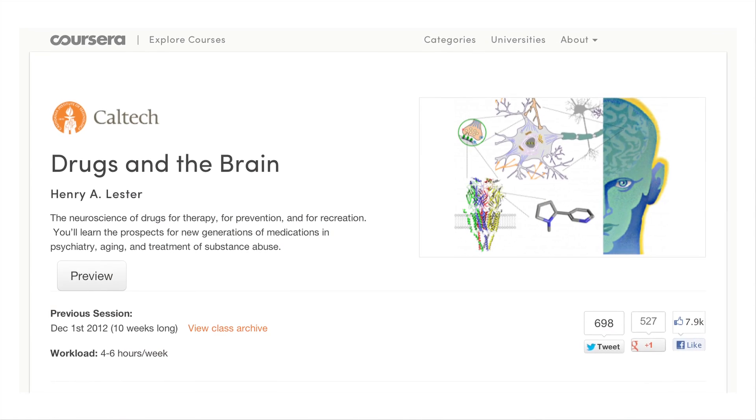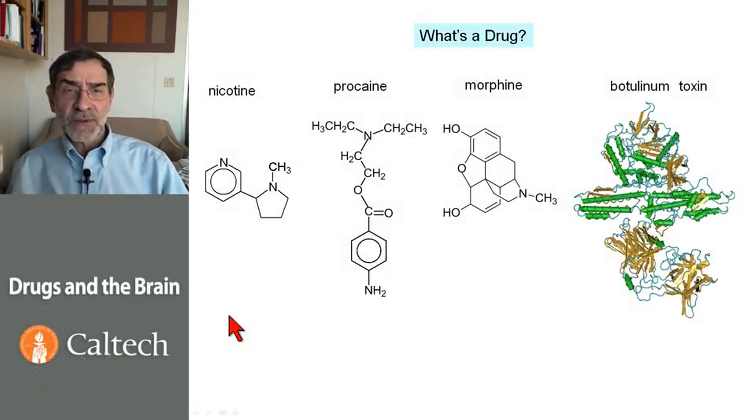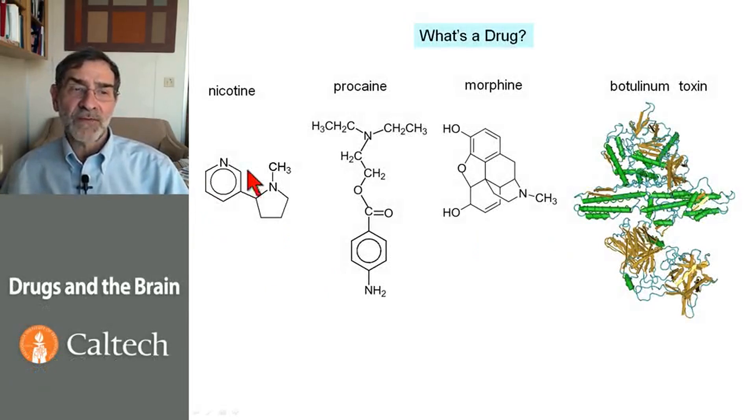I'm Henry Lester, the Bren Professor of Biology and Biological Engineering at Caltech, and I taught a MOOC entitled Drugs and the Brain. When you teach online, instead of imagining 60,000 students, you think about one student. You try to explain clearly, keep a sense of humor, and try to look that student in the eye and understand whether he or she is really getting it.